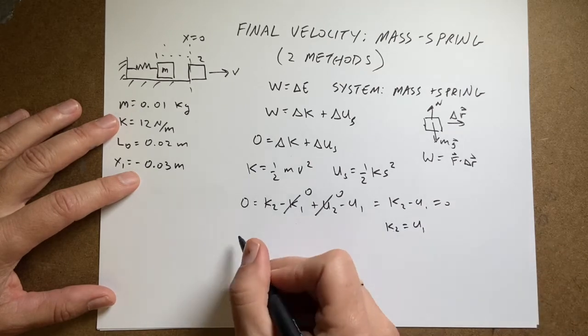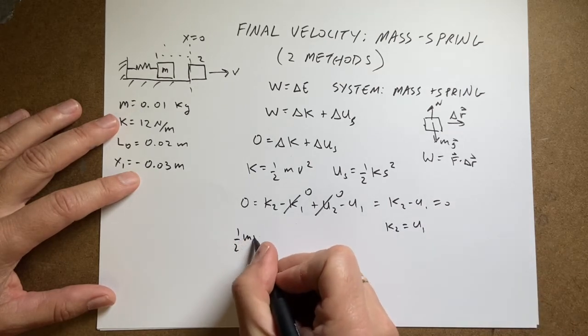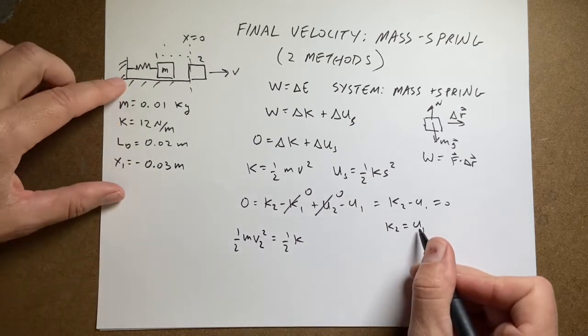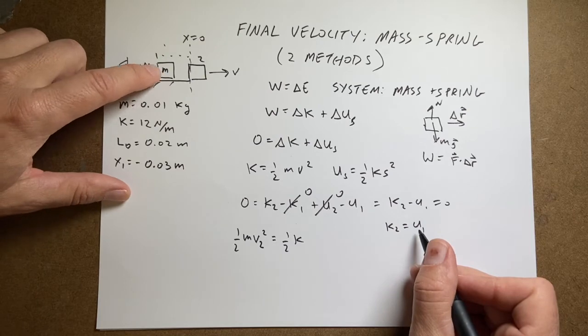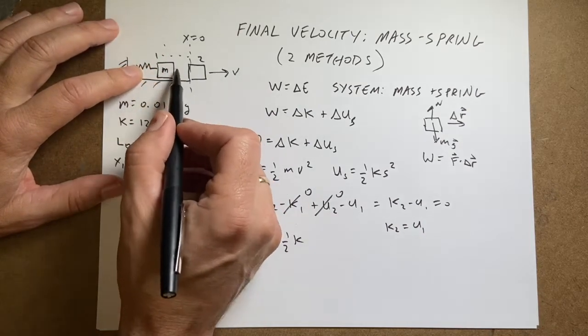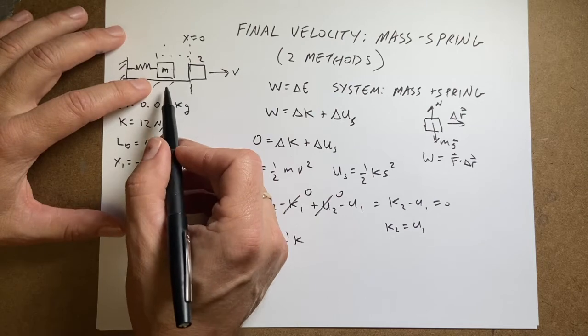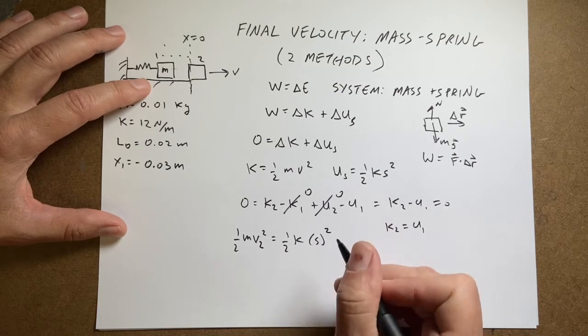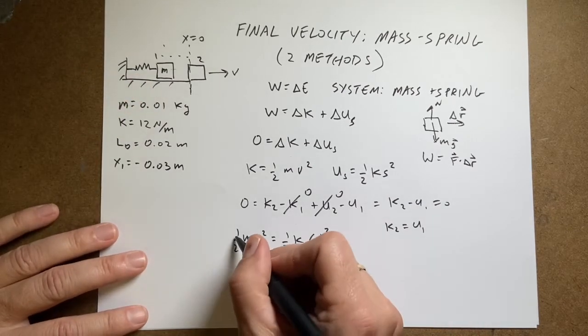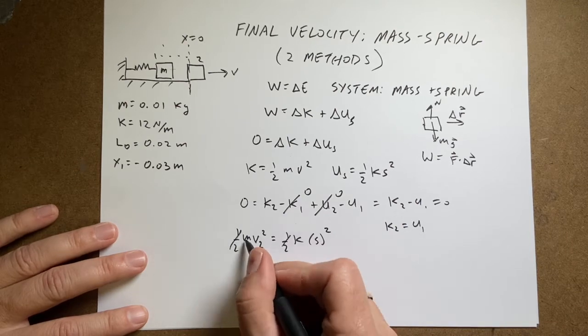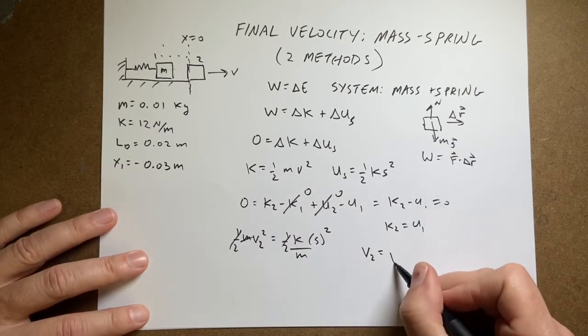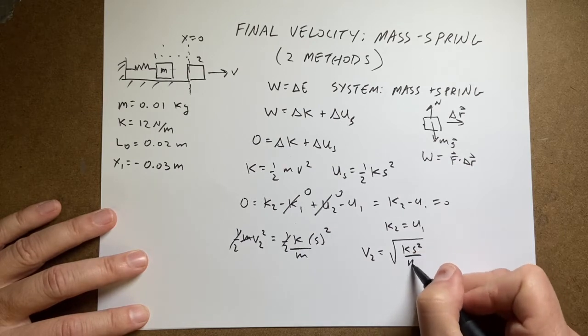So now I just need to put in my values. One-half mv2 squared equals one-half k s1 squared, s is going to be this distance. If this is at x equals zero, and I push it back to negative 0.03, this is going to be, let's just call it s. But s is 0.03. Now I can solve for v. I can multiply both sides by 2. I can divide both sides by m. And I get v2 equals the square root of k s squared over m.